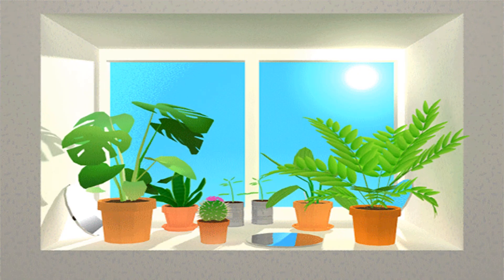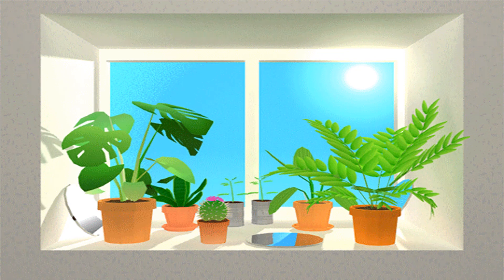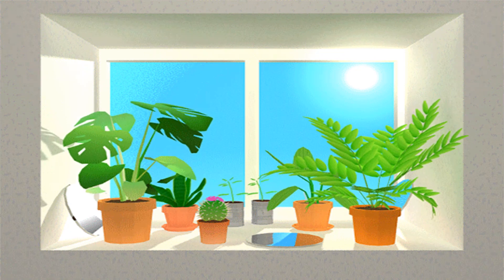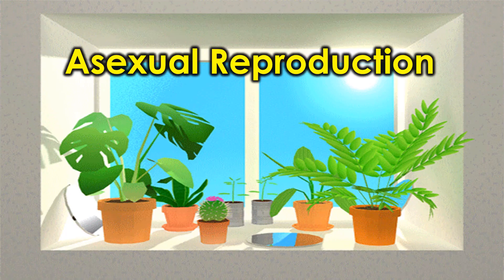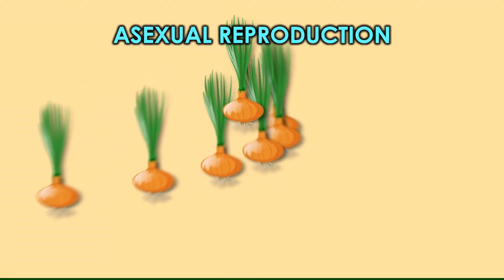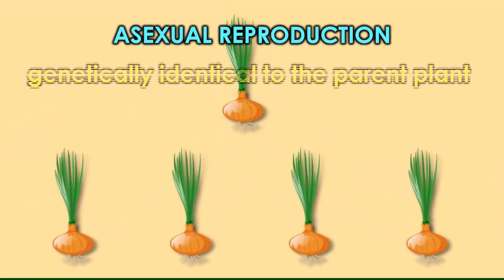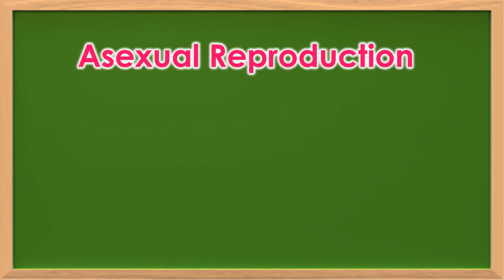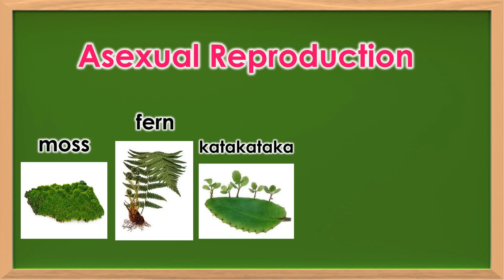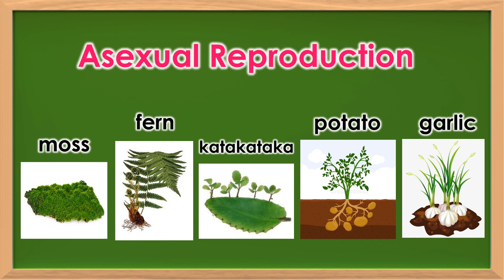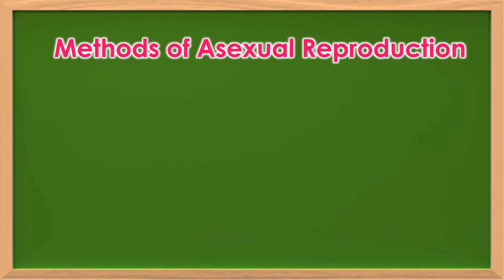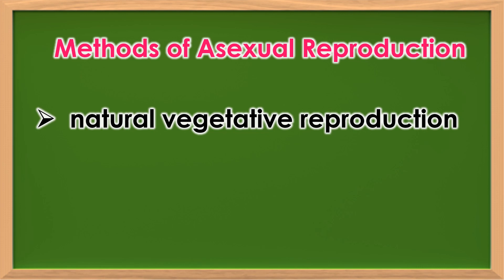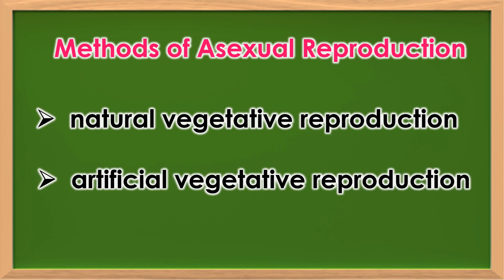Plants do not only grow from seeds. There is another way of growing plants — it is through asexual reproduction. Asexual reproduction produces individuals that are genetically identical to the parent plant. Some plants like moss, fern, katakataka, potatoes, garlic, and many others undergo asexual reproduction.